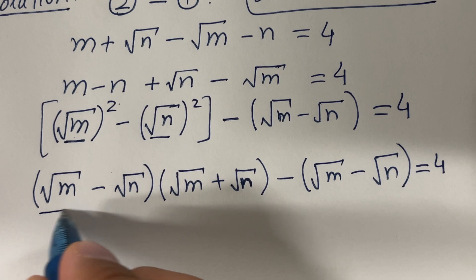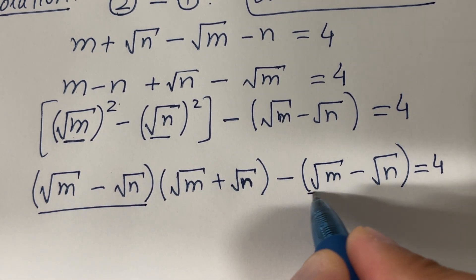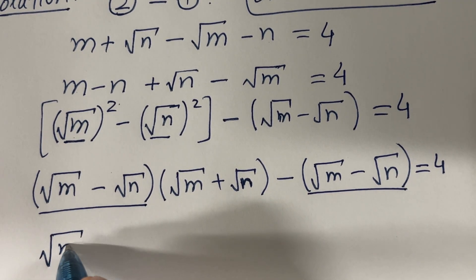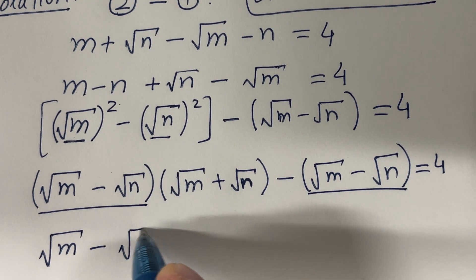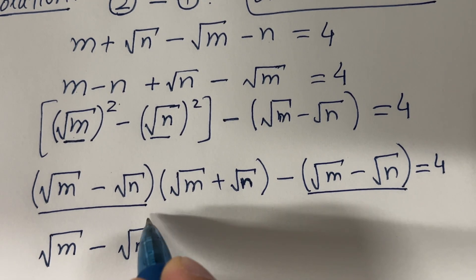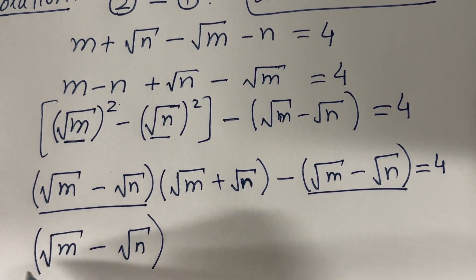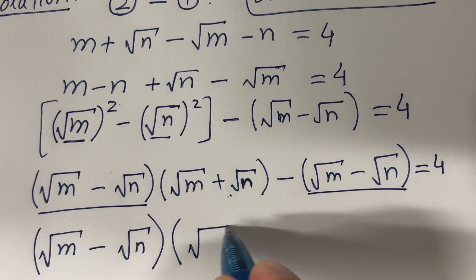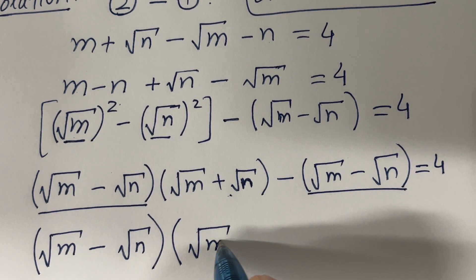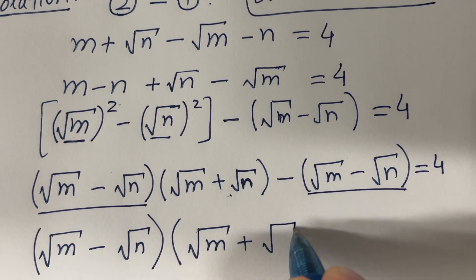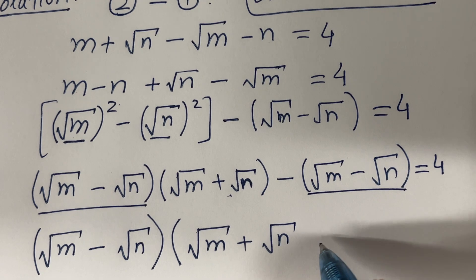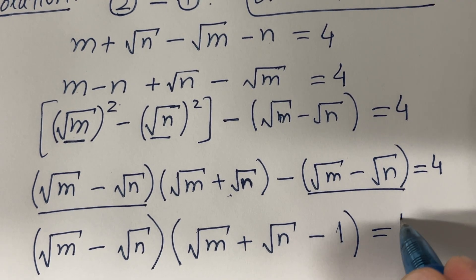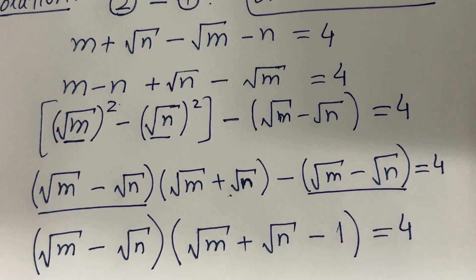If you look here, we have (√m minus √n) as a common factor. Let's pull that out. So we have (√m minus √n) times (√m plus √n minus 1) equal to 4.